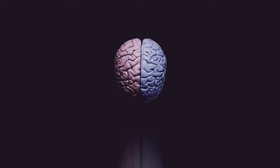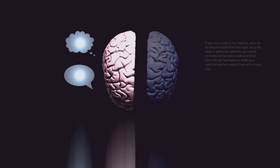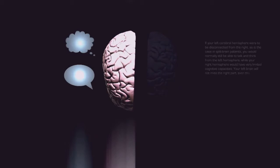If your left cerebral hemisphere were to be disconnected from the right, as is the case in split-brain patients, you would normally still be able to talk and think from the left hemisphere, while your right hemisphere would have very limited cognitive capacities. Your left brain will not miss the right part, even though this profoundly changes your perception.